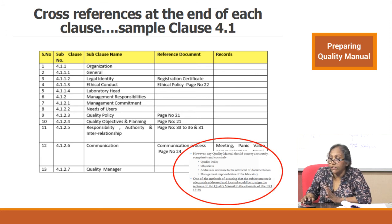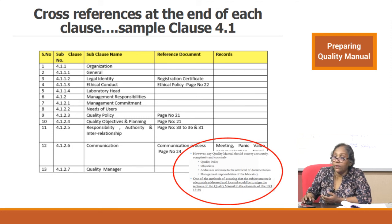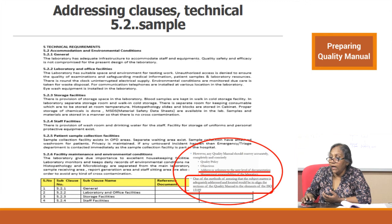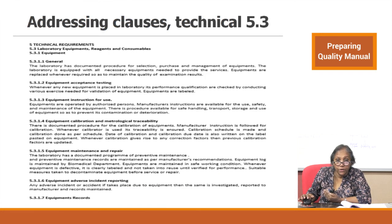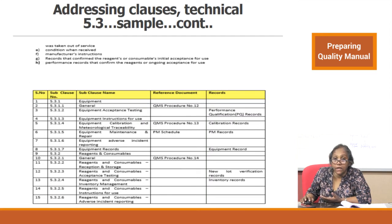The same pattern applies to technical clauses. For clause 5.2 — Accommodation and Environment — you state what you are doing and show the reference documents at the end. For clause 5.3 — Reagents and Equipment — you list the equipment and the corresponding records and reference documents. At the end of each clause, you write the supporting documents. More details on referencing Level 2 and Level 3 documents will be shown in a subsequent video.